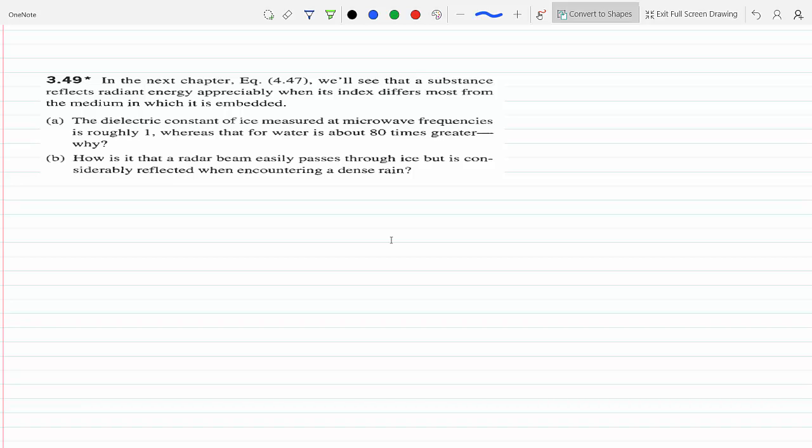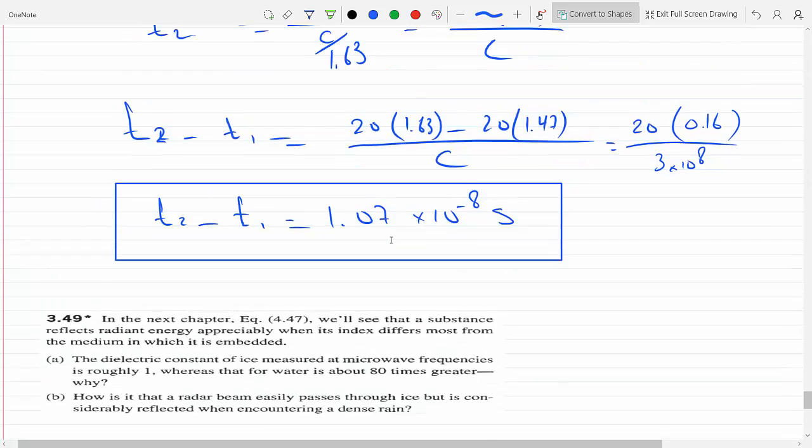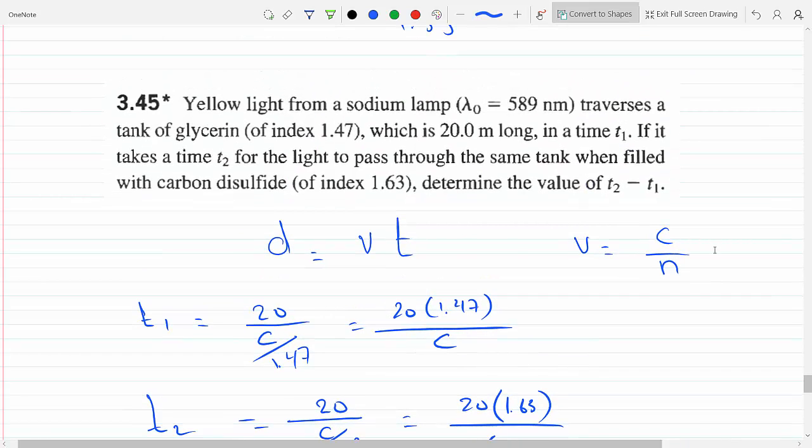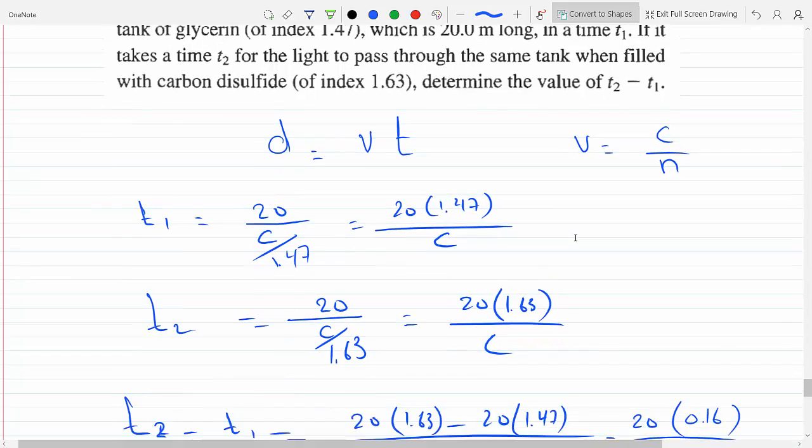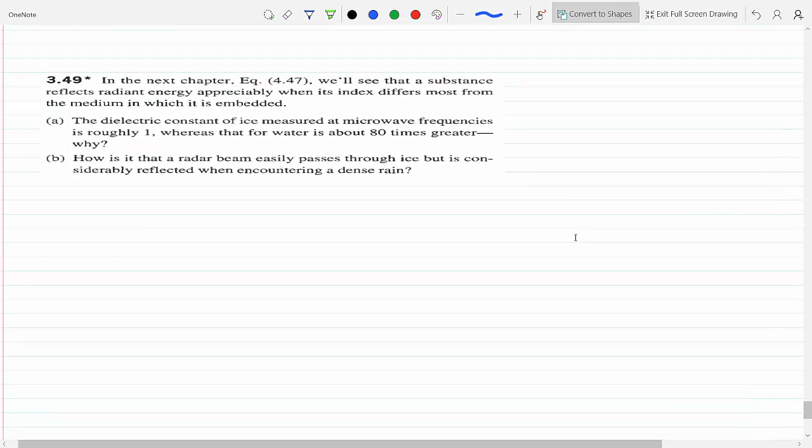If you remember how we solved this question, 80 times greater means it's going to slow light, or slow an electromagnetic wave, 80 times more than that of liquid water. They won't be able to get through, and that's because of the collisions they will encounter as a result of the molecules not being free to move.